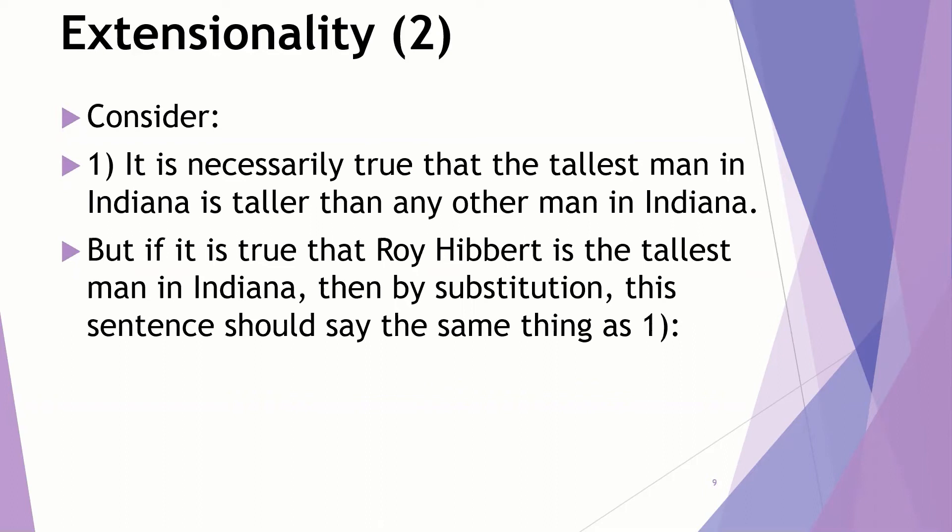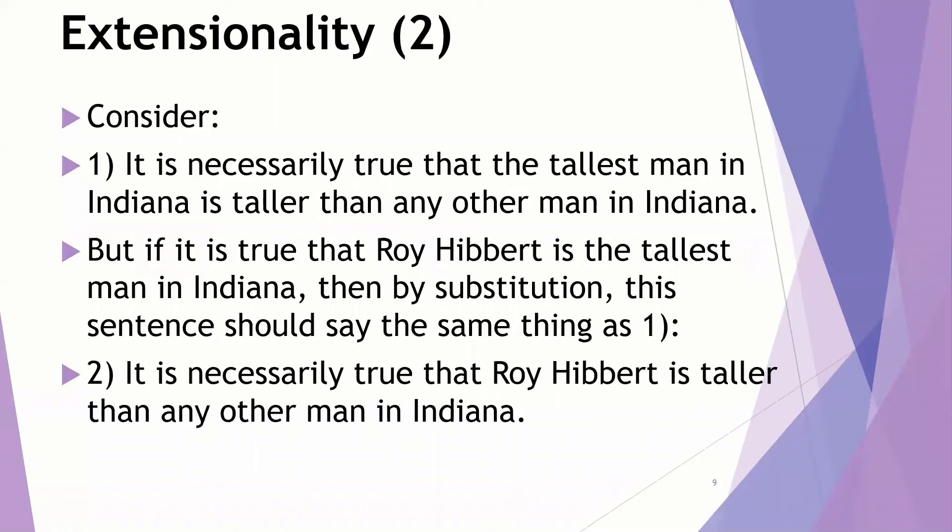But if it's true that Roy Hibbert is the tallest man in Indiana, he played for the Pacers up until 2015, so I doubt if he even lives in Indiana anymore. But in any case, if it is true that Roy Hibbert is the tallest man in Indiana, then by substitution, this next sentence should say the same thing as one. By substitution, you should be able to say that it is necessarily true that Roy Hibbert is taller than any other man in Indiana. The problem is, one seems to be uncontroversial and true, while two is false. It's possible that Shawn Bradley, who's 7'7", would move to Indiana, and then Roy Hibbert would no longer be taller than any other man in Indiana. That's a problem. You can't do that substitution like you can with normal propositional logic.